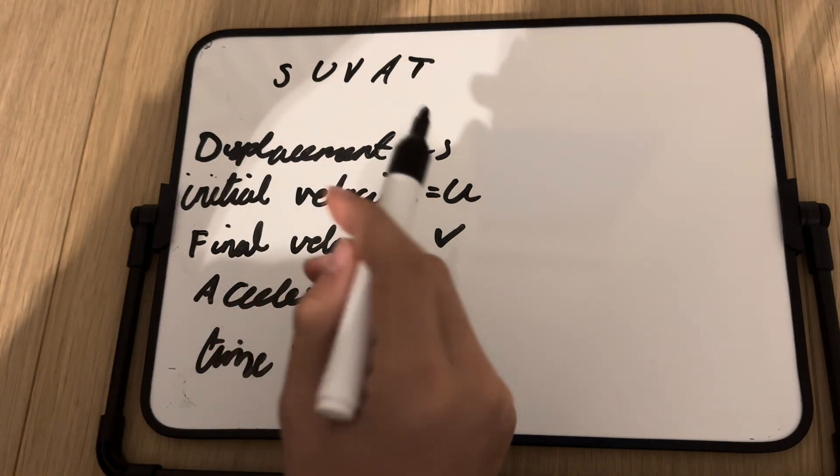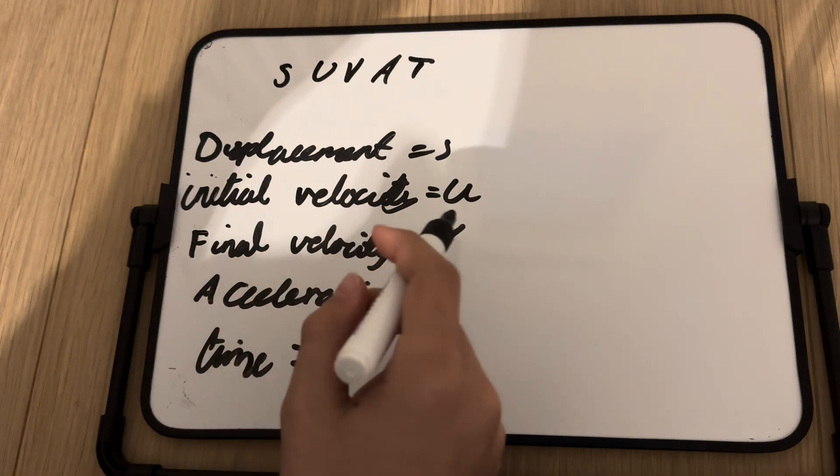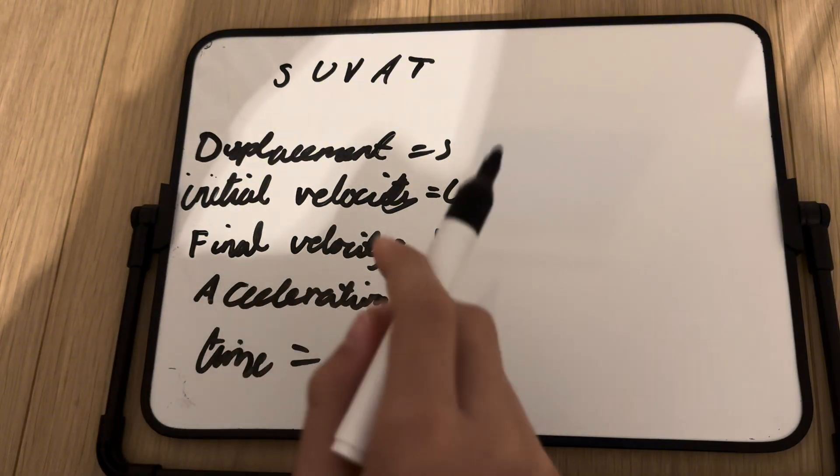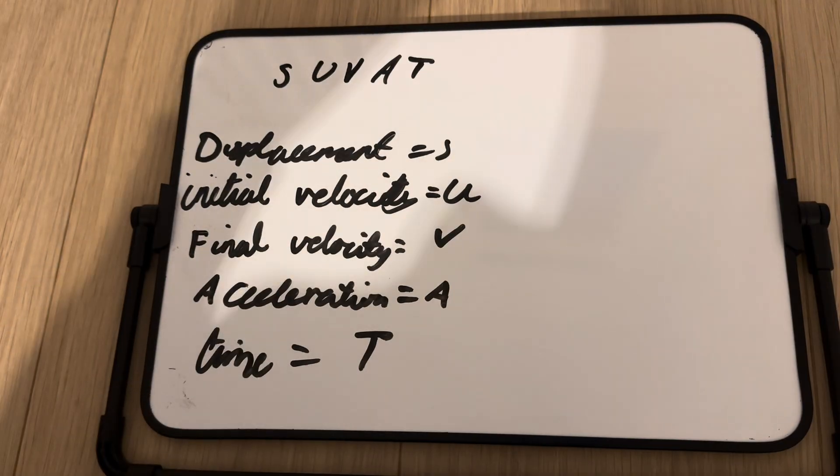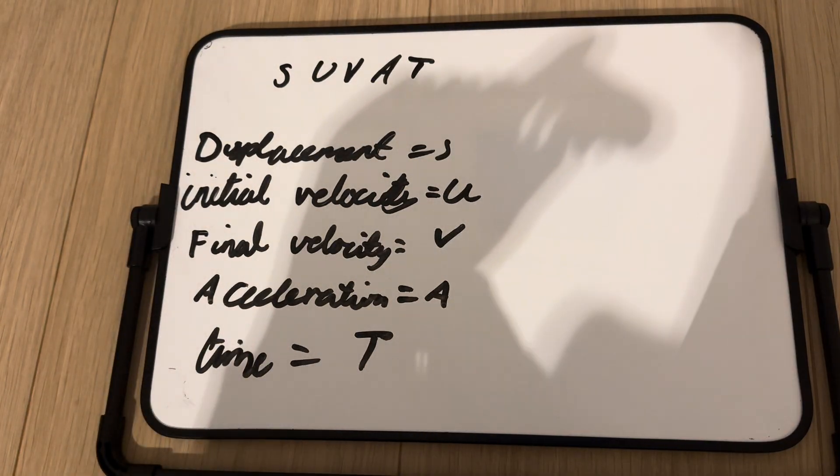So, displacement is equal to S, initial velocity is equal to U, final velocity is equal to V, acceleration is equal to A. Well, actually, constant acceleration is equal to A, and time is equal to T.